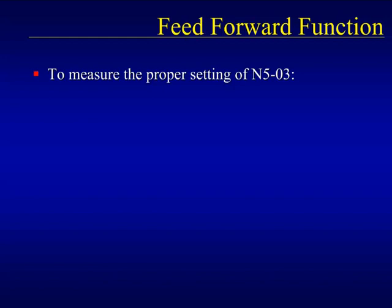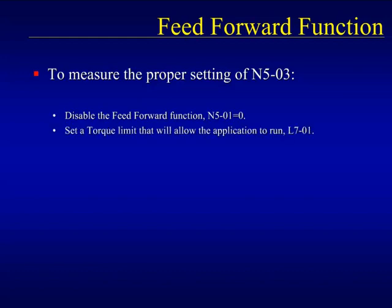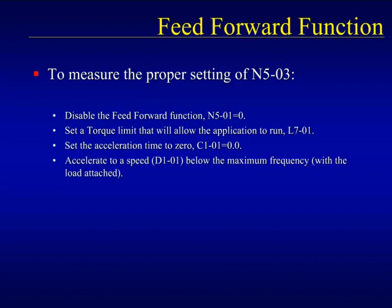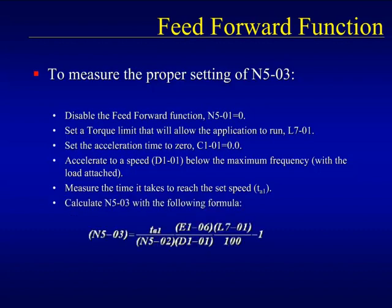To properly measure the setting of parameter N5-03, we'll take a specific test setup of the drive. Start by making sure that the feed forward function is turned off. Next, adjust the torque limit function by lowering it until it will just allow the application to fully run. Set the acceleration time to 0.0 seconds. With the full load attached, accelerate to some speed under the maximum frequency of the drive. Measure the time that it takes for the drive to reach the set speed. Use the acceleration time and the settings of the parameters to calculate the proper feed forward gain using the formula shown. Absolutely do not use this test method if the application in question is a hoist or crane type of application due to the torque limiting.